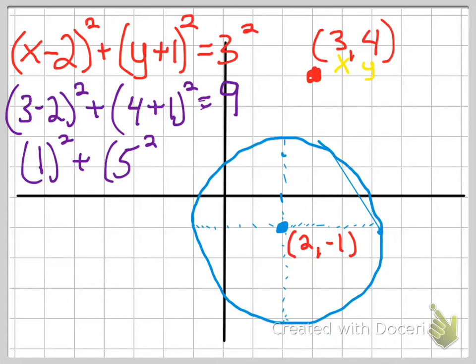Check this out: 3 minus 2 is 1, so 1² plus 4 plus 1 is 5². 1² is 1, 5² is 25, and that equals 9. When I add these two numbers together, this number is greater than my radius squared.